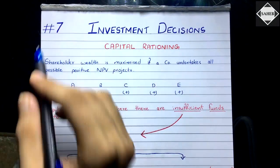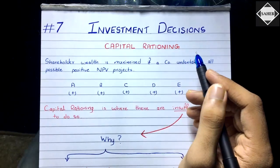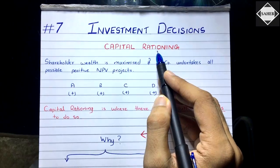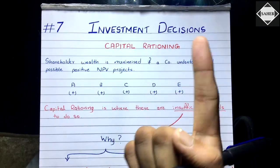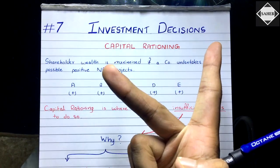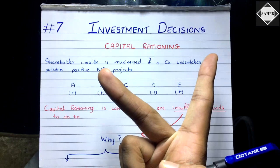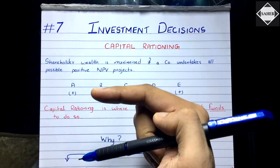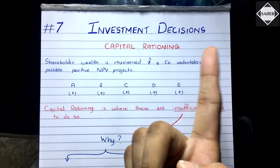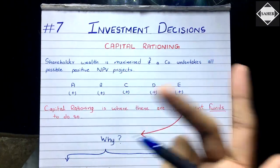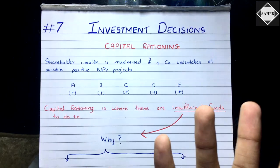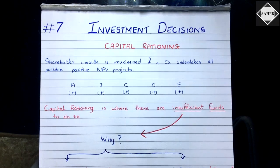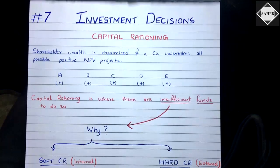Welcome back to the seventh video of the capital budgeting chapter. In this video we are going to understand what is meant by capital rationing. Capital rationing is a very simple concept if you know the net present value technique and profitability index. If you don't know these techniques, please go to the description below for the NPV and PI video links, then come back.